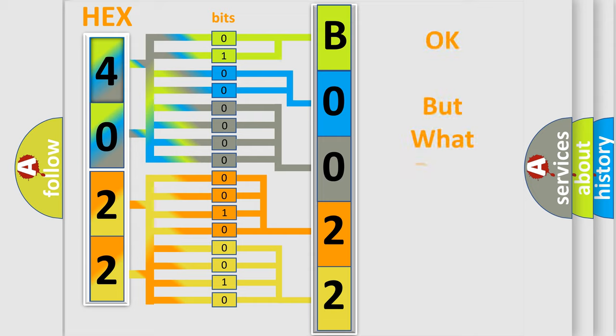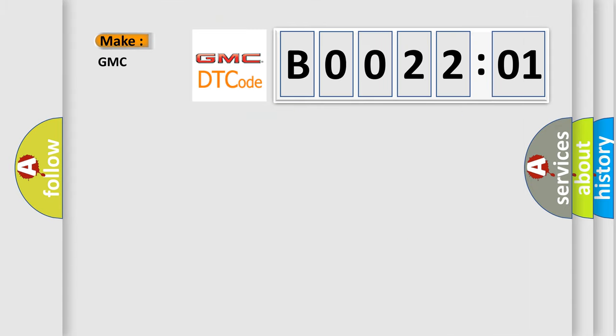The number itself does not make sense to us if we cannot assign information about what it actually expresses. So, what does the diagnostic trouble code B002201 interpret specifically for GMC car manufacturers?